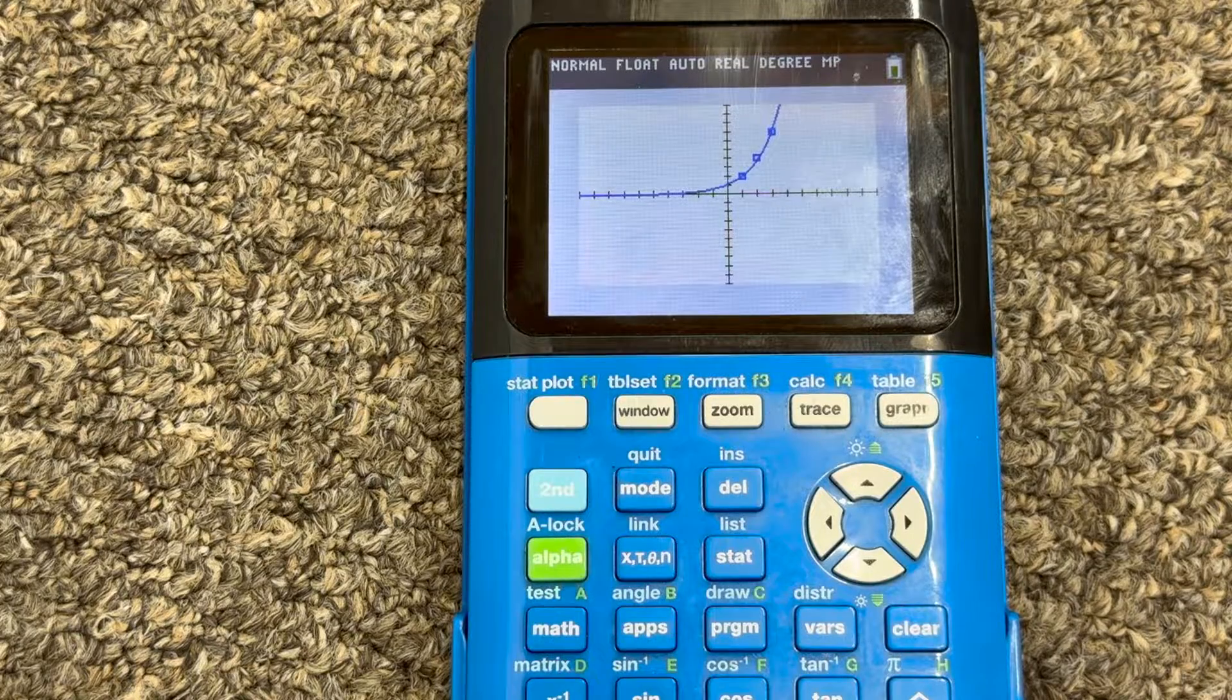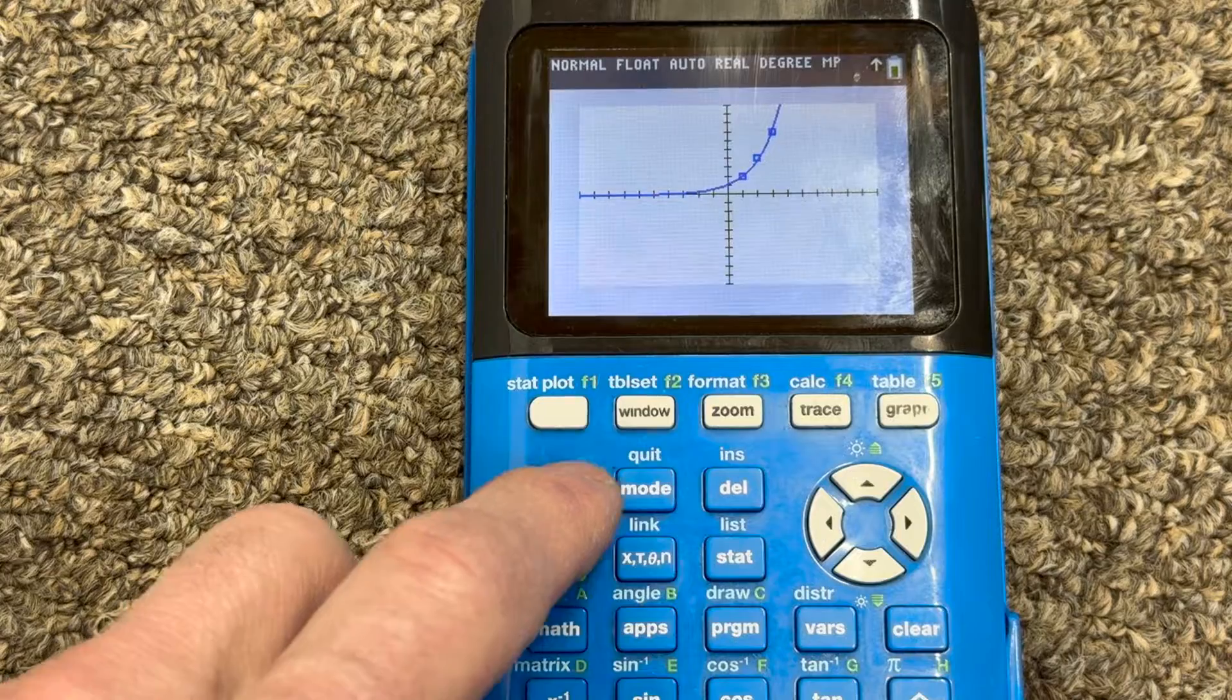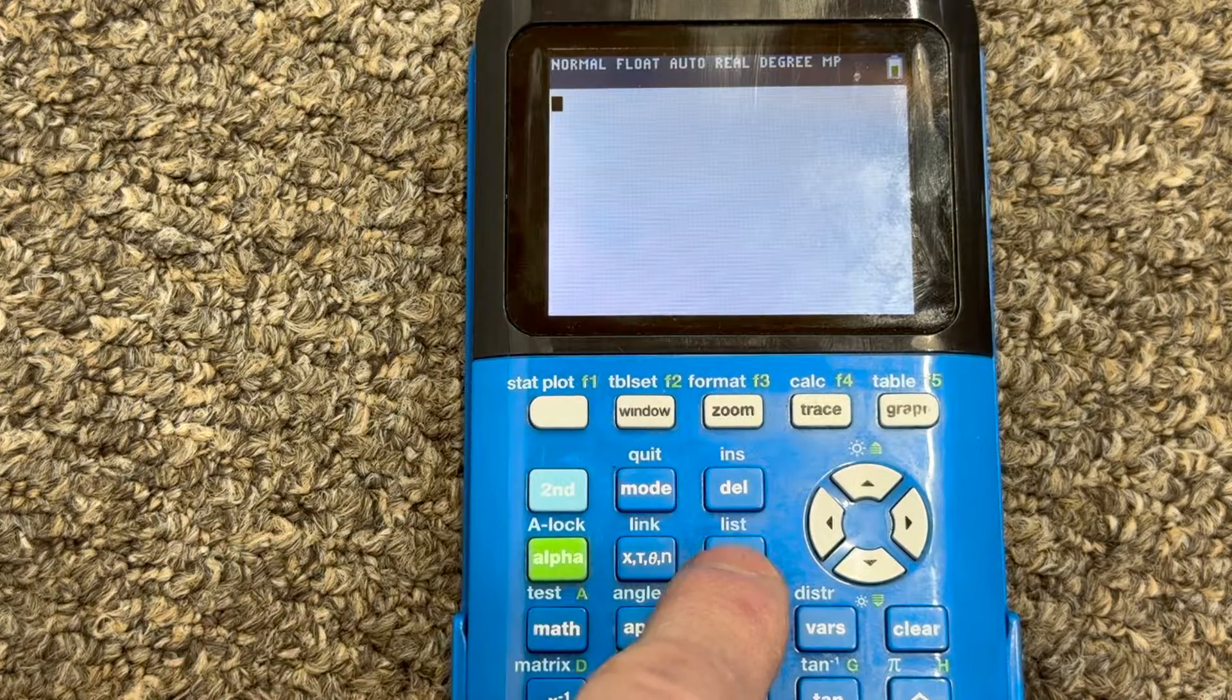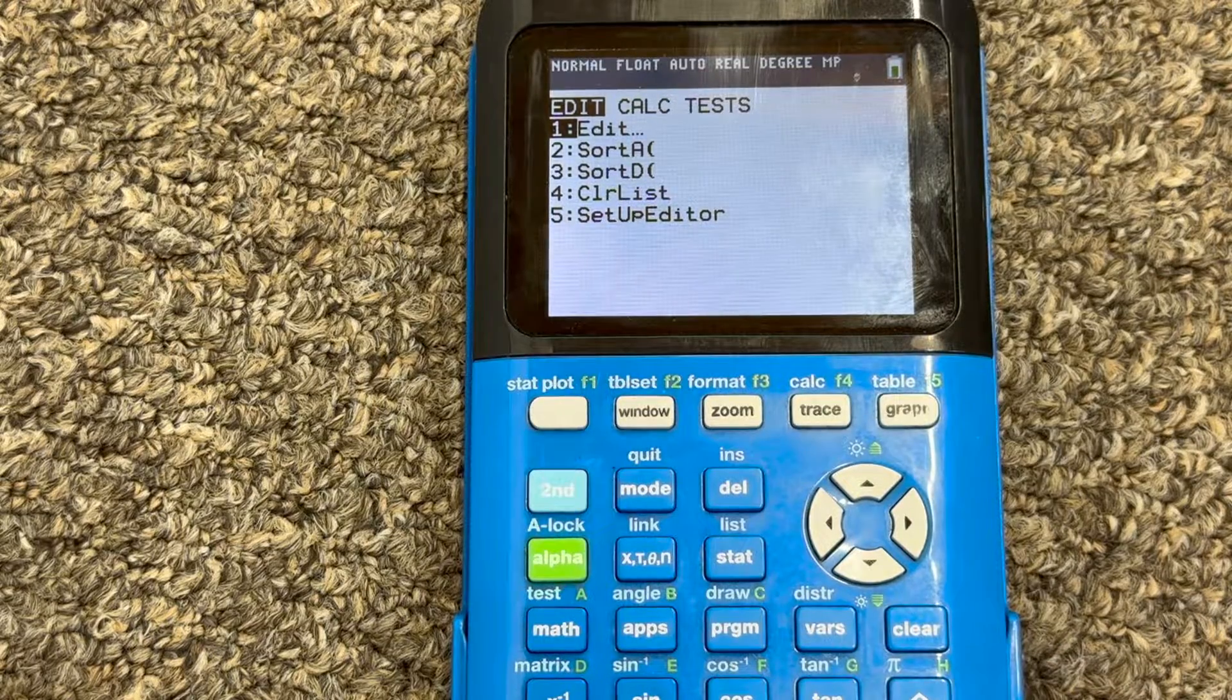Now again, if you make a mistake anywhere along the way, you can go back to the home screen by pressing second quit. You can go back into where we had our data, which was under statistics, stat, and you can repeat that process.